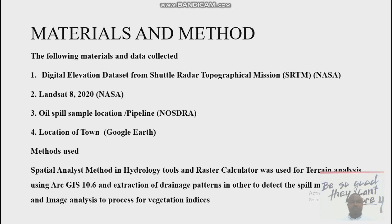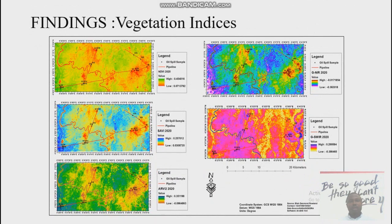What do we mean by vegetation indices? We are talking about the NDVI — Normalized Difference Vegetation Index — the Soil Adjusted Vegetation Index (SAVI), and others. This is a summary of the findings carried out by my team, particularly to check on the Vegetation Index, which reflects vegetation stress.